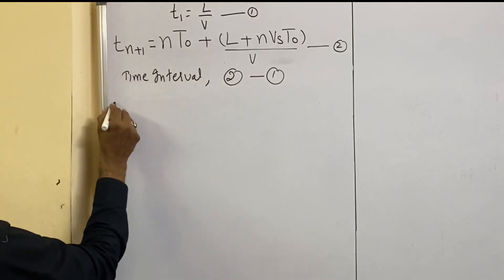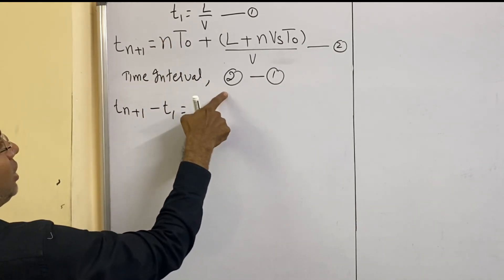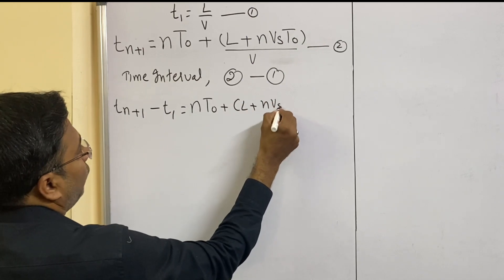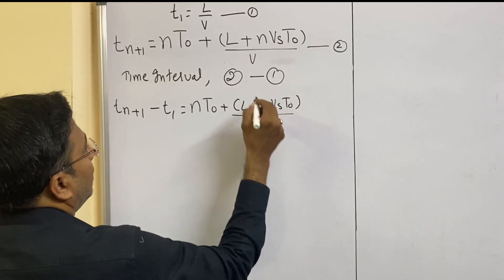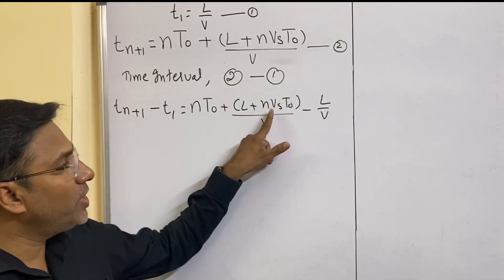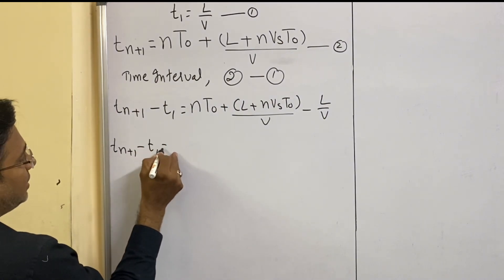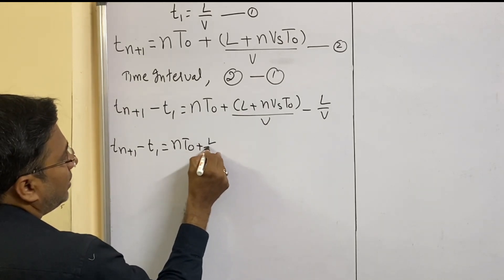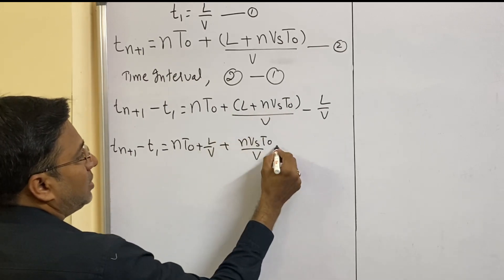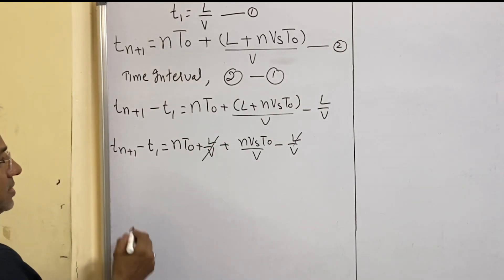In equation 2, the LHS is Tn+1, and in equation 1 the LHS is T1, so we write Tn+1 minus T1. For the RHS of equation 2, we copy: nT0 + (L + nVsT0)/V, and then minus L/V from equation 1. Now we separate with a common denominator V: Tn+1 − T1 = nT0 + L/V + nVsT0/V − L/V. The +L/V and −L/V cancel.